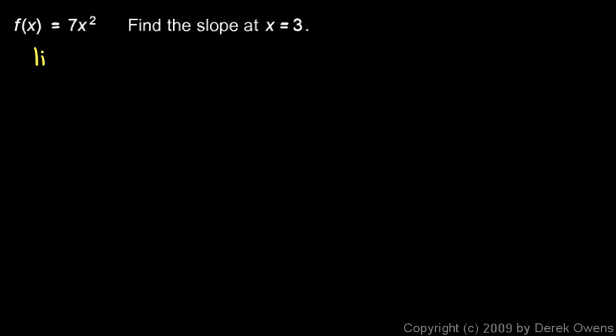So what we're going to calculate is the limit as x approaches 3 of f of x minus f of 3 over x minus 3. The limit as x approaches 3, f of x is just 7x squared,